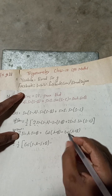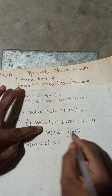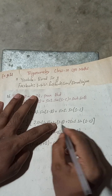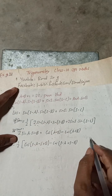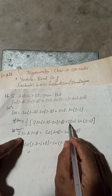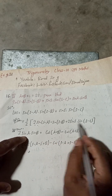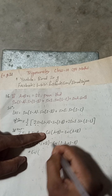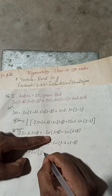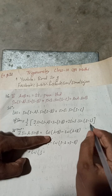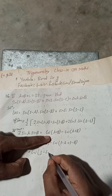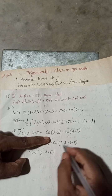In the same way, for the second term, 2·sin(s)·sin(s−c): A is s and B is (s−c). So we write cos[s − (s−c)] minus cos[s + (s−c)], which gives cos[s − s + c] minus cos[s + s − c], simplifying to cos(c) minus cos(2s−c).